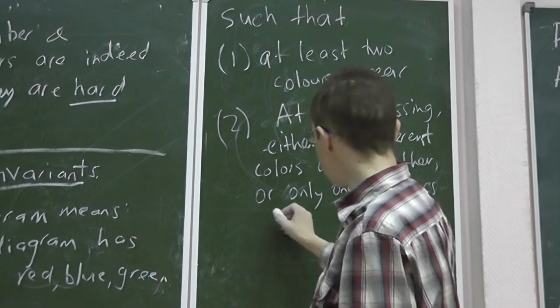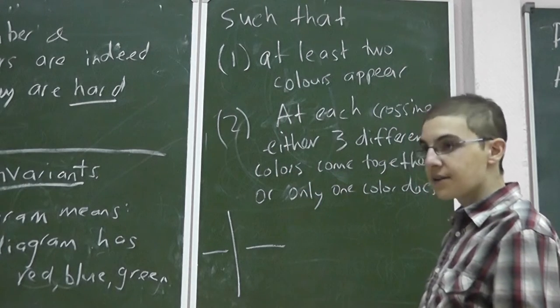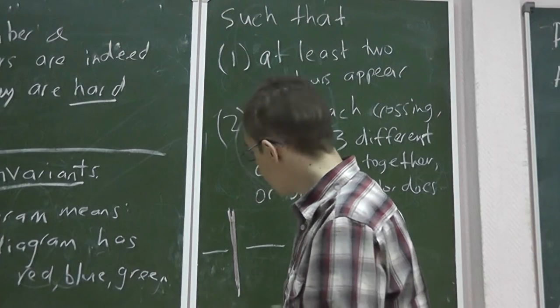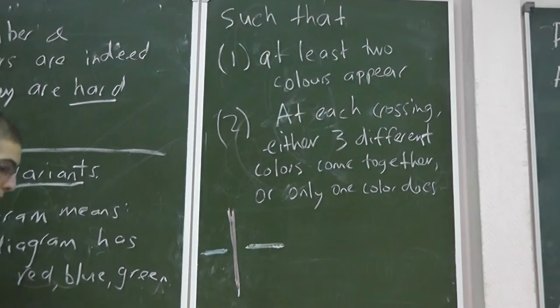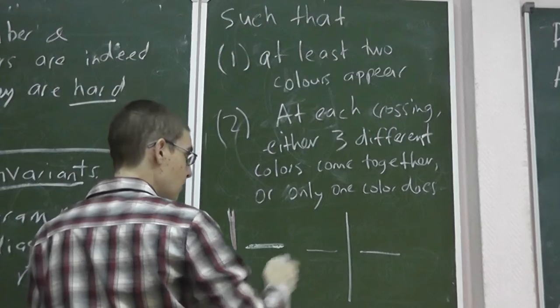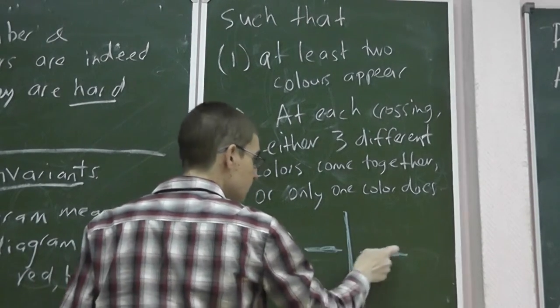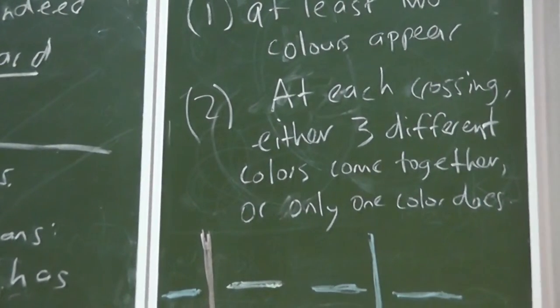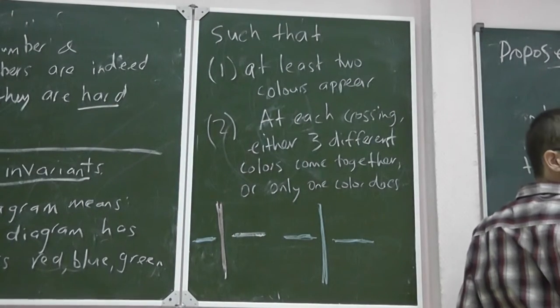So let me draw a picture. I have some crossing. Either I have three colours coming together, or I have all the same colour. I have a couple of examples, and then... What about the unknot?